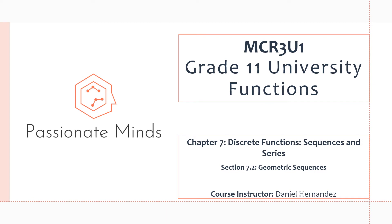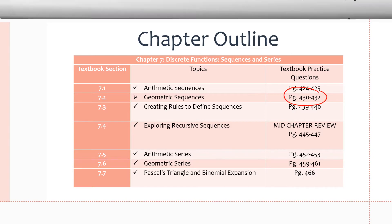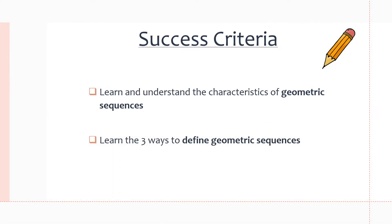Hello everyone, welcome back to another MCR3U1 video. In this video we will be continuing chapter 7 and covering section 7.2 on geometric sequences. Here's the chapter outline once again, and you can find extra practice questions on pages 430 to 432 in the textbook. Here's the success criteria — we want to learn and understand the characteristics of geometric sequences and the three ways to define them.